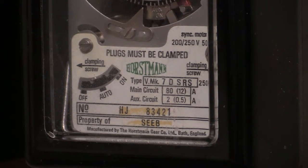So what we've got there is the VMK 7D SRS 200 to 250 volts with 50 hertz alternation frequency, which is very important for the synchro motor in order to make it run at the correct speed. The main switching capacity on that is 80 amps, and at 240 volts that is equivalent to 19,200 watts. The auxiliary circuit, which will be for the rate change trigger, is 2 amps.